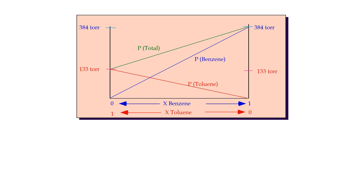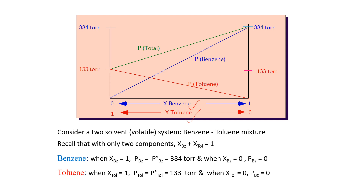As an example, consider a mixture of two volatile liquids: benzene and toluene. With only two components, we have the mole fraction of benzene plus the mole fraction of toluene equal to 1. Looking at benzene first: when the mole fraction of benzene equals 1, the vapor pressure exerted by benzene is 384 torr. When the mole fraction of benzene equals 0, the vapor pressure is also 0.